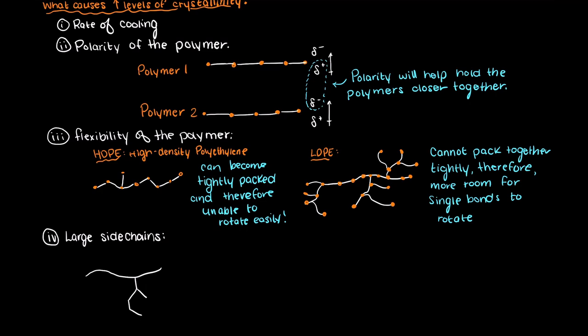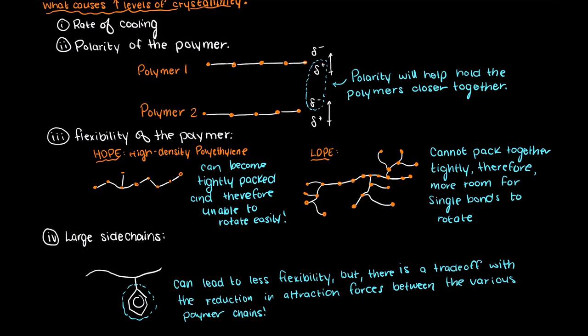Thirdly, a large side chain on a polymer can generally limit the polymer's ability to be mobile, and one would think that this would lead to a more crystalline polymer. However, this is a trade-off with the reduction in the attraction forces between the main polymer chains.